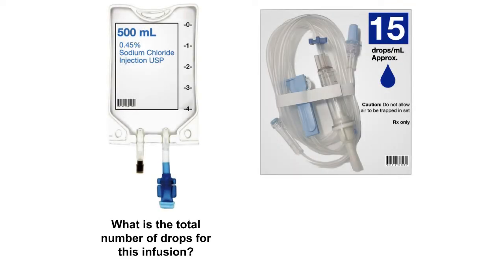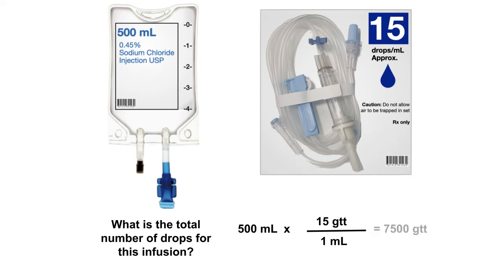Now you try. Suppose we are given different tubing with a drop factor of 15 drops per mL. What is the total volume of this infusion in drops? Pause the video for a moment to calculate the total volume in drops. The calculation is 500 mL times 15 drops per mL. 500 times 15 is 7,500. The volume of this bag with the given tubing is 7,500 drops.